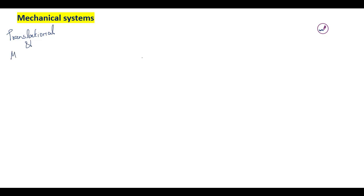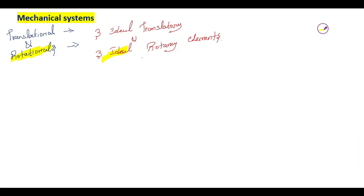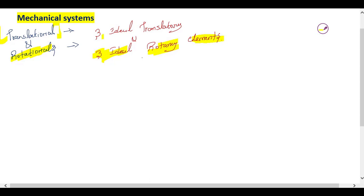In control systems, when finding the mathematical model or analyzing mechanical systems, we consider translational mechanical systems and rotational mechanical systems. In both cases, there are three basic ideal elements — translatory and rotary. We will study rotational mechanical systems after this translational mechanical system, starting with what a mechanical translational system is and how to find its transfer function.